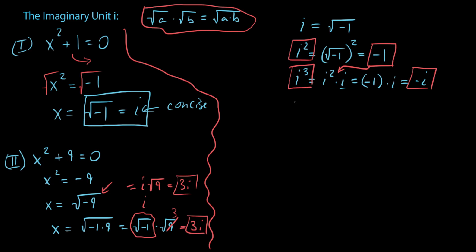And then building on this even further, we could say i to the fourth. Again, with our rules of exponents, since we know i squared equals negative 1, we'll express this as i squared times i squared. Or in other words, we could say that's negative 1 times negative 1, which is just 1.